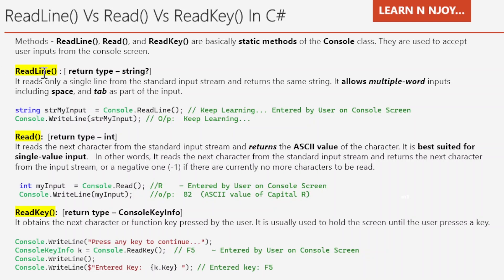ReadLine method — its return type is a nullable string. It reads only a single line from the standard input stream and returns that same string. It allows multiple word inputs including spaces and tabs as part of the input. Since this is a static method of the Console class, we don't need to create an object of the Console class. We simply call it as Console.ReadLine.